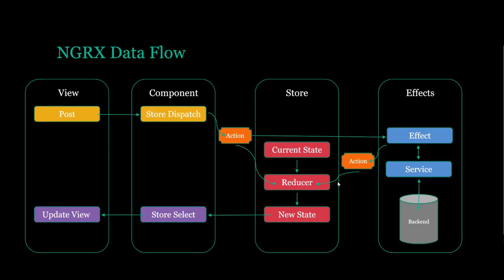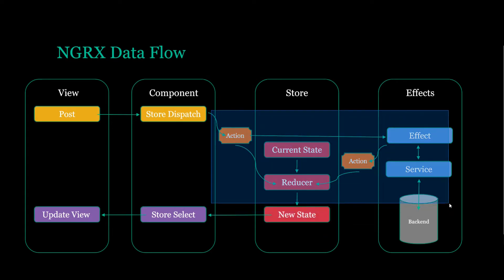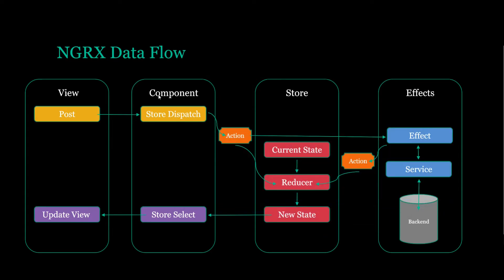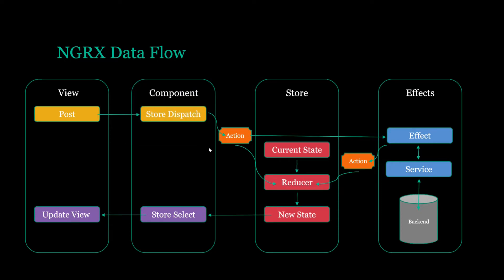Now that we've assembled all our NGRX pieces for removing a product, let's dispatch our actions from our components. We need to dispatch two actions from two different components. We also need to set up some side effects to alert the user whenever there's a failure or when we're successful at deleting the product.